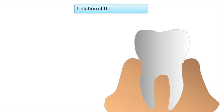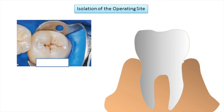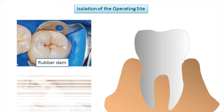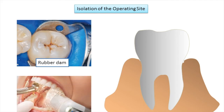The next step is isolation of the operating site. Isolation for tooth-colored restorations is critical and can be accomplished with a rubber dam or an isolation device such as an Isolite. Cotton rolls should be placed in the sulcus. Regardless of the method, isolation is imperative for a successful bond, as contamination of etched enamel or dentine by saliva will result in decreased bond strength, and contamination of composite during insertion will degrade physical and mechanical properties.